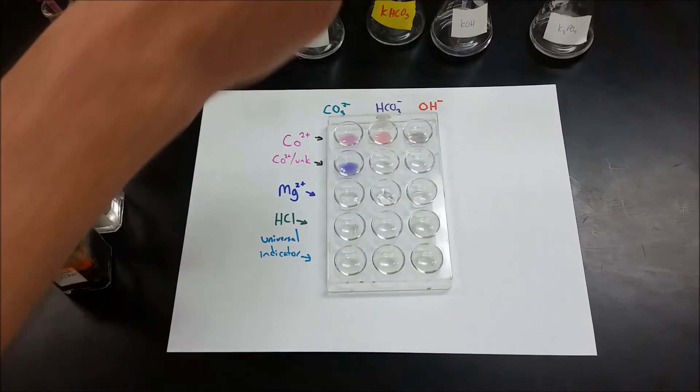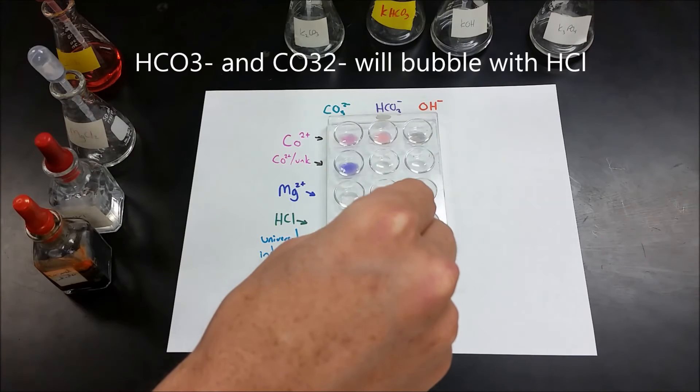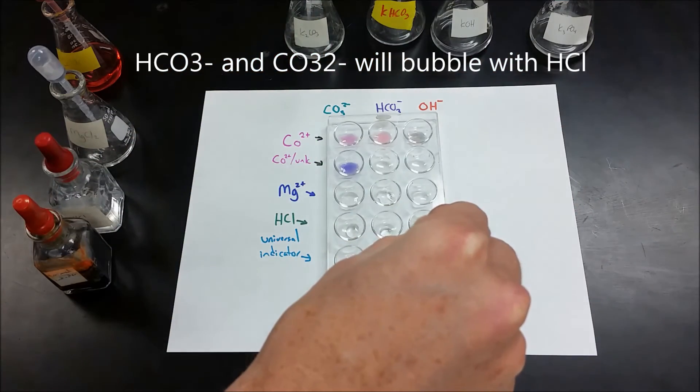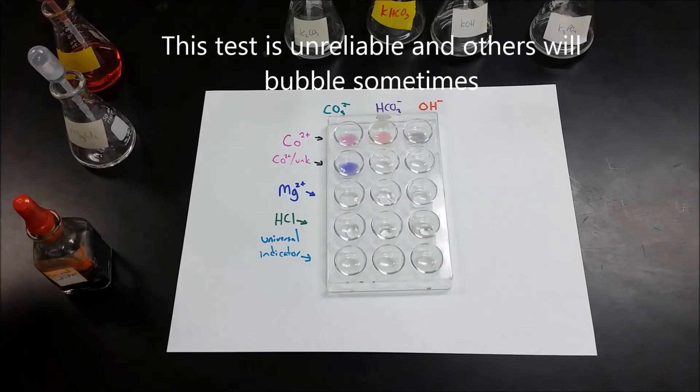The next test you can do is you can go ahead and take all three and add hydrochloric acid to them. This one is very unreliable, but it's a good test as kind of a confirmation that you definitely have one of these. The carbonate and bicarbonate will form bubbles when you add hydrochloric acid.